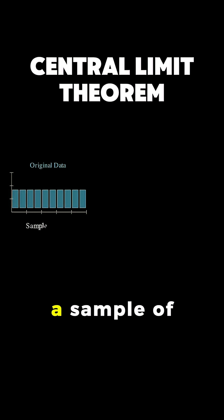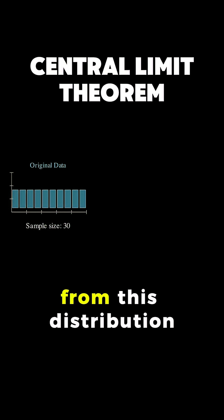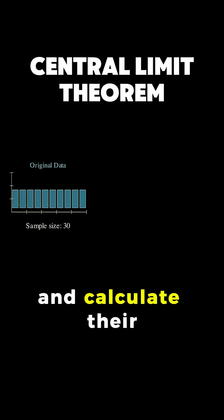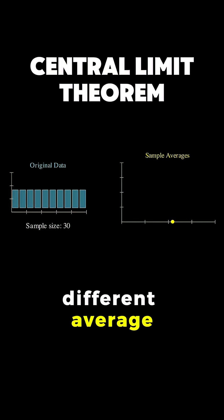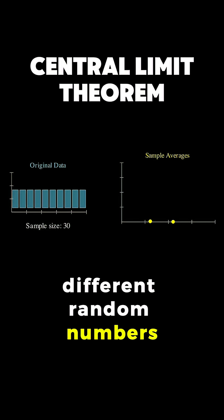Now, watch what happens when we take a sample of 30 random values from this distribution and calculate their average, then we do it again and again and again. Each time we get a slightly different average because we are picking different random numbers.